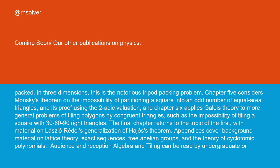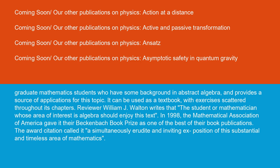Audience and reception: Algebra and Tiling can be read by undergraduate or graduate mathematics students who have some background in abstract algebra and provides a source of applications for this topic. It can be used as a textbook with exercises scattered throughout its chapters. Reviewer William J. Walton writes that the student or mathematician whose area of interest is algebra should enjoy this text.